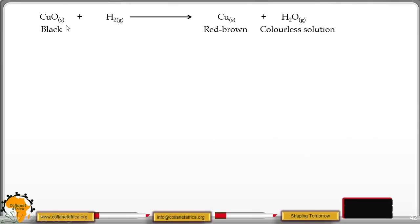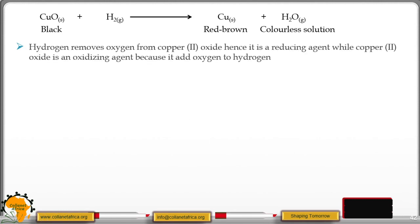Hydrogen removes oxygen from copper(II) oxide, hence it is a reducing agent. While copper(II) oxide is an oxidizing agent because it is adding oxygen to the hydrogen, or it adds oxygen to the hydrogen.